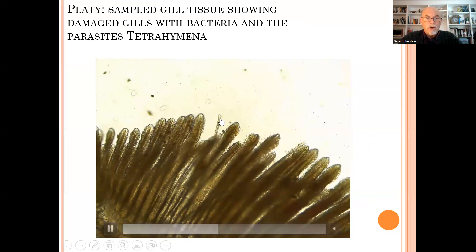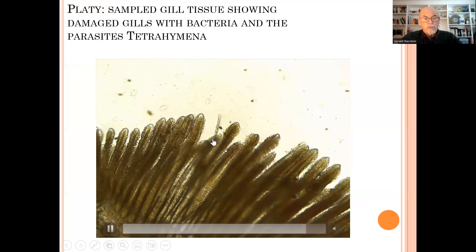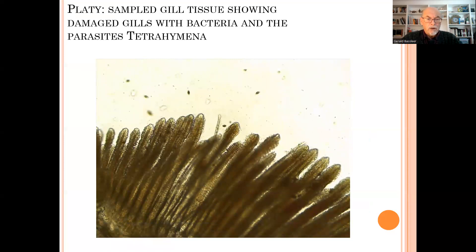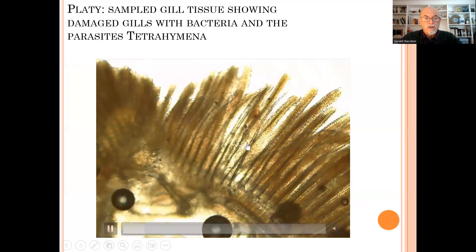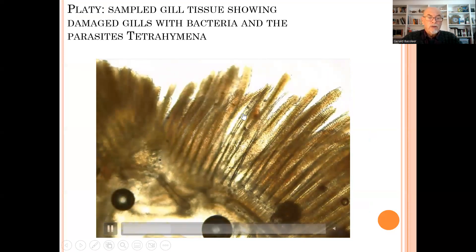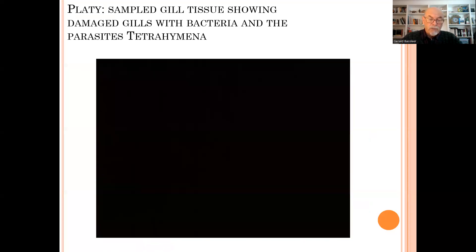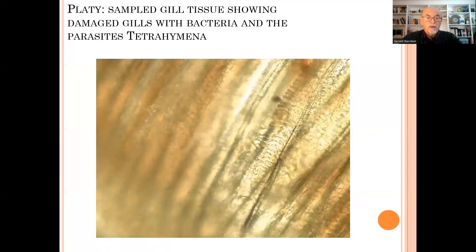Also in the gills they can cause a lot of damage. Here you see a gill arch which is damaged; you see some gill filaments which are devoured and the lamellae are gone, with parasites moving around and making lesions. You can see the lamellae which are gone and secondary bacterial infections will appear on those wounds.